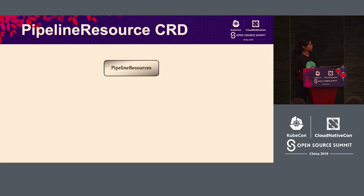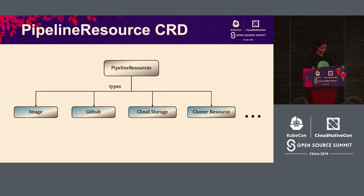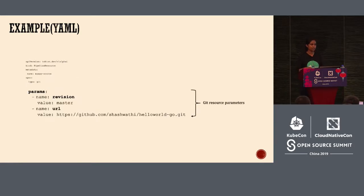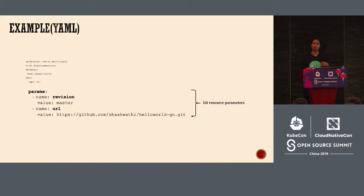The first resource is the Pipeline Resource CRD. Pipeline resources are like a set of inputs and outputs that you can define for your CI jobs. I'll briefly mention GitHub as the most common resource. As you define a GitHub pipeline resource type, let's look at a sample YAML. The type refers to what type of pipeline resource it is. The next section is the parameters — the defining characteristics of the pipeline resource. In the context of Git, this refers to the revision, which could be a branch name, a commit SHA, or a version tag, and the URL where the project is actually present.